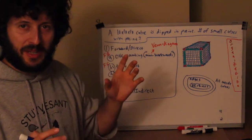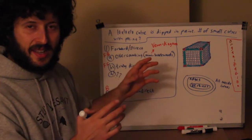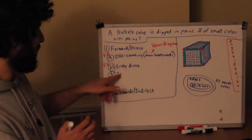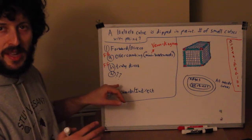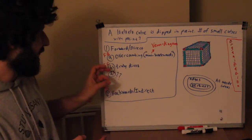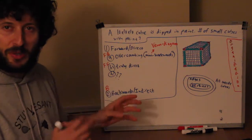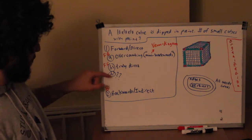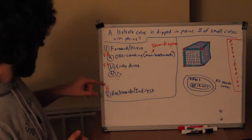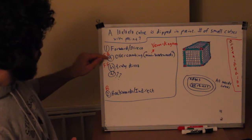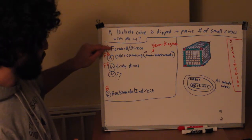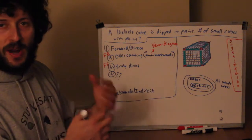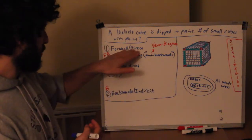I find that very confusing because you have to visualize all of these areas and track what you've counted and what you haven't. So that's just another scheme. Now let's go over the main things I want to show you. By forward or direct approach, I mean that we are adding up directly what we want.